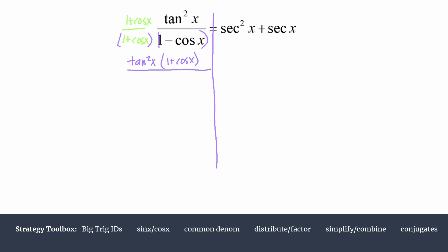We're foiling out these binomials. We should expect outer and inner terms to cancel because we're using a conjugate. So we have 1 times 1, which is 1. The outer term is negative cosine x. The inner term is positive cosine x, so those go to 0. And then we have minus cosine squared x, all equal to the right hand side.